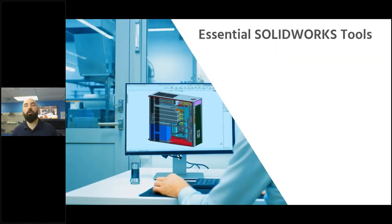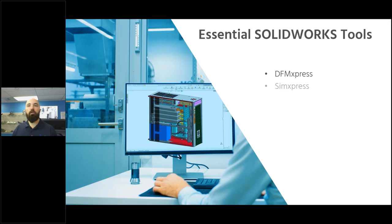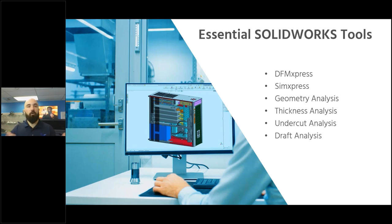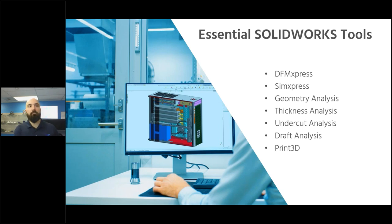Here's a quick rundown of all the tools covered: Design for Manufacturing Express — powerful tool with multiple uses for analyzing parts; Simulation Express — to validate that parts will hold up under design loads; geometry analysis to find small gaps or errors; thickness analysis to ensure material can be applied between exterior faces; undercut analysis; draft analysis to confirm the part doesn't require supports on visible surfaces; and Print3D as a final validation step. These tools are not directly designed for 3D printing, but can be very beneficial in the 3D printing process.